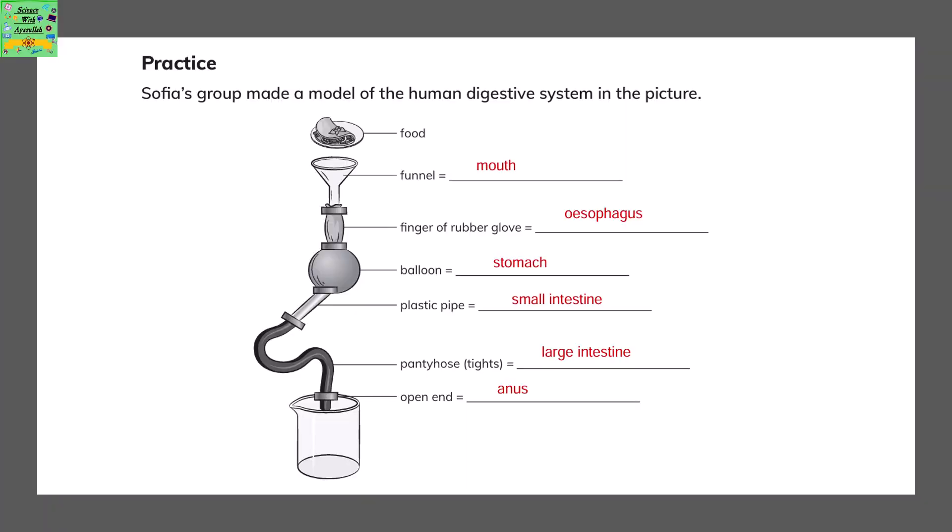Sophia's group made a model of the human digestive system in the picture. This food and a part of the digestive system in the model contains a funnel which acts like the mouth. There is a finger of rubber glove which acts like the esophagus. A balloon is attached which is the stomach.